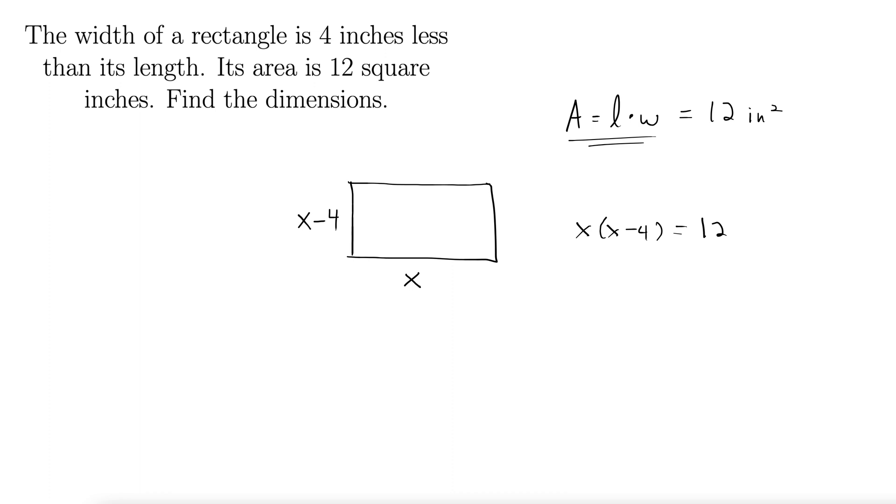Anytime you have an equation with x squared in it, you want to get 0 on the other side of the equal sign. Here it's a little hard to tell that we have x squared, but indeed we do have an x squared right there. So let's work towards getting that 0 on the other side. Distributing this x through gives us x squared minus 4x equals 12. And now to get that 0, we can subtract 12 from both sides to get x squared minus 4x minus 12 equals 0.